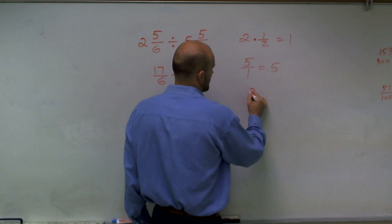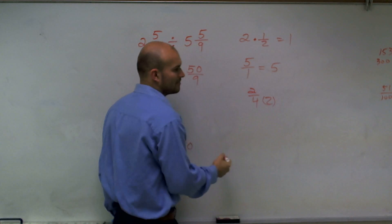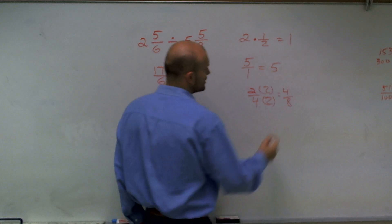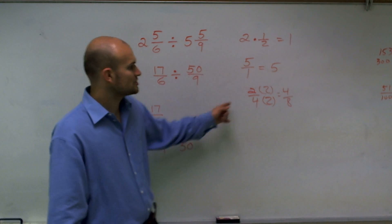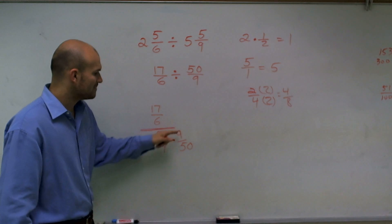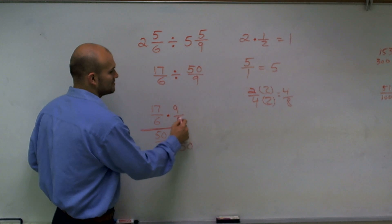If you have a fraction and you multiply the denominator by a number, you also have to multiply the numerator by that same number to get equivalent fractions. As you guys should know, 2/4 is equivalent to 4/8. So since I multiplied the bottom fraction by 9/50, I need to multiply the top fraction by 9/50.